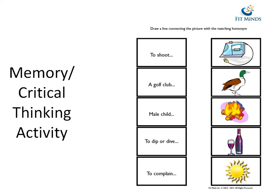The next activity is the memory or critical thinking activity. In this case we're asking them to identify what word goes with what picture. We take the word 'to shoot' and attach it to 'fire' because they are connected. A golf club is an 'iron,' a male child is a 'son,' to dip or dive is 'to duck,' and to complain — we all know that — is 'to whine.' So it gives them a little bit of critical thinking analysis on what word goes with what picture.